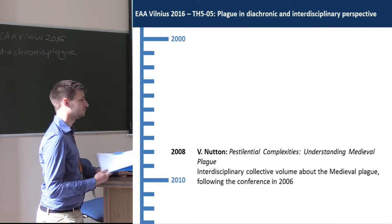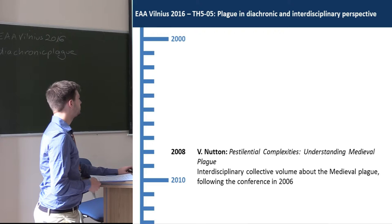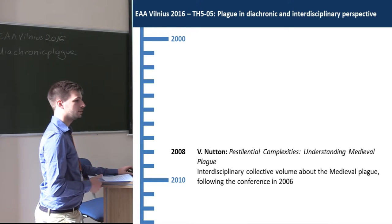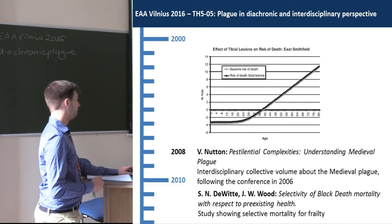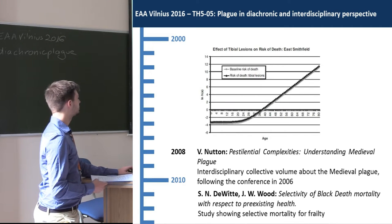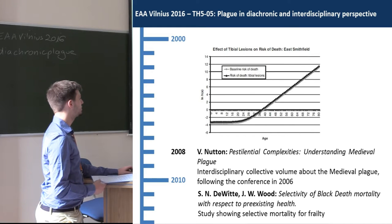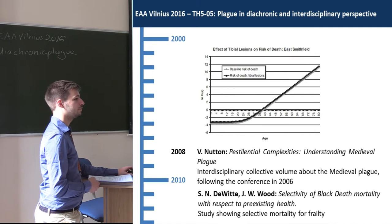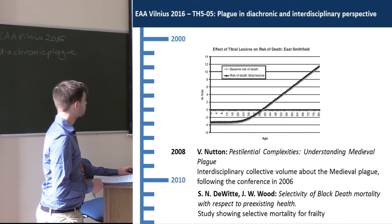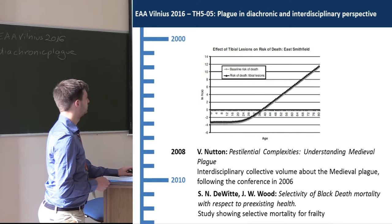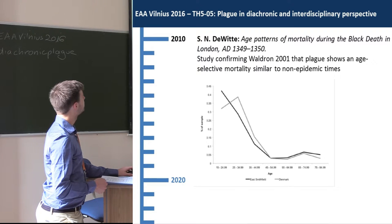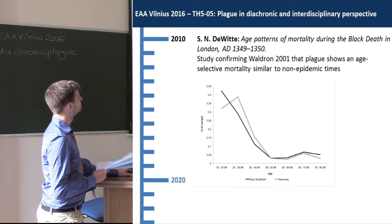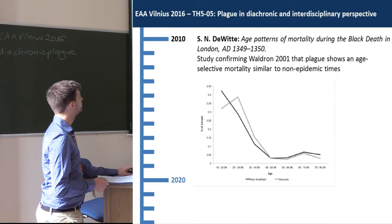In the following year, a similar volume was published by Vivian Natan on the Black Death in the late medieval period. Also that year, Sharon DeWitt published together with Wood another epidemiological study on plague, linking mortality to frailty, followed in the next year by a study on age distribution in plague burials.